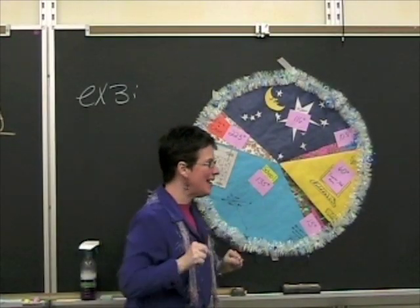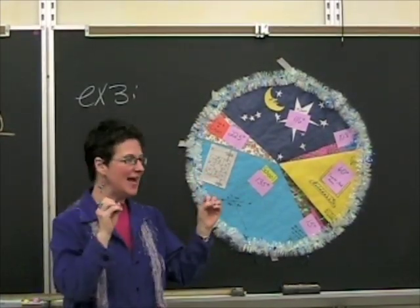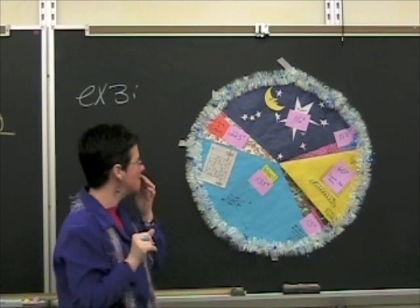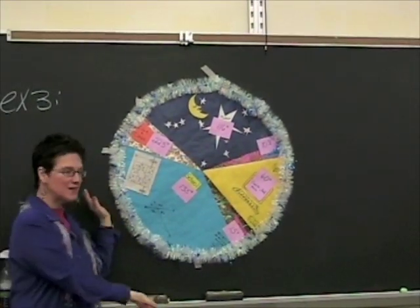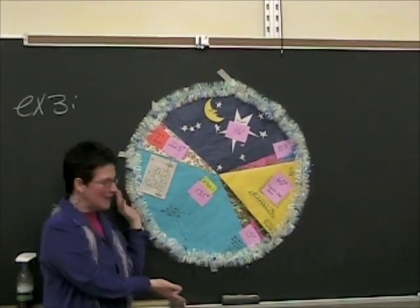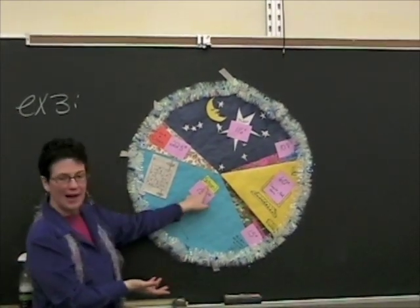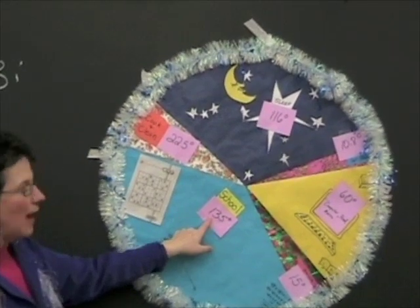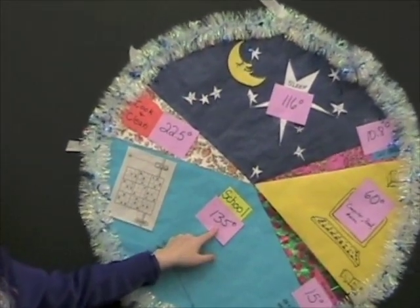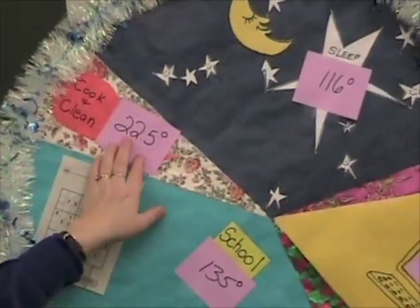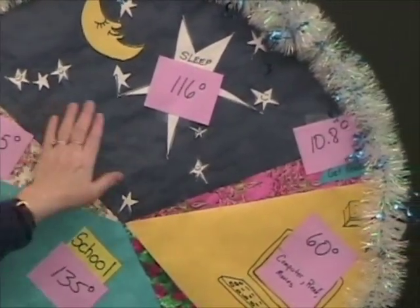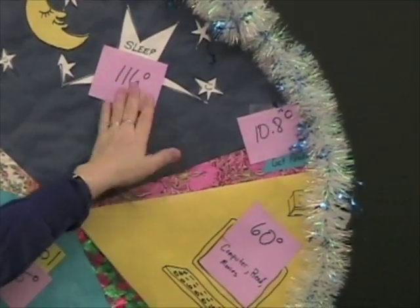Alright, example three is about me, my day, and gray hair. Now, here we see a beautiful chart of my day. As you can see, here I'm at school, 135 degrees of a whole circle. Here I cook and clean for 22.5 degrees. Here I sleep for 116 degrees.